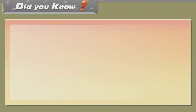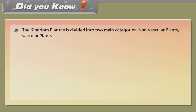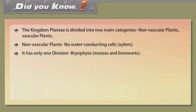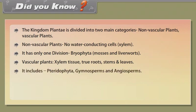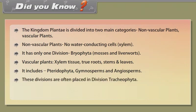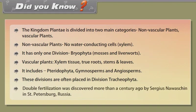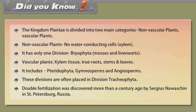Did you know? The Kingdom Plantae is divided into two main categories: non-vascular plants and vascular plants. Non-vascular plants have no water conducting cells, xylem. It has only one division, Bryophyta including mosses and liverworts. Vascular plants have xylem tissue, true roots, stems and leaves. It includes Pteridophyta, Gymnosperms and Angiosperms. These divisions are often placed in division Tracheophyta. Double fertilization was discovered more than a century ago by Sergius Nawaschin in St. Petersburg, Russia.